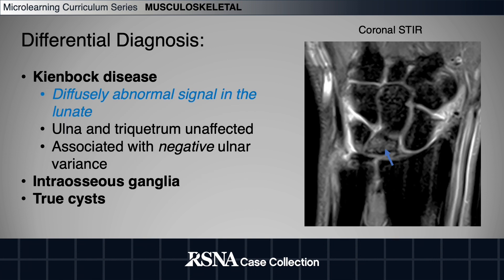Differential diagnosis includes the items listed, with Kienbock disease being the most commonly confounding entity. In Kienbock disease, which is osteonecrosis of the lunate, the lunate is diffusely involved. The triquetrum and ulnar head are not affected. Additionally, Kienbock disease is associated with negative ulnar variance.